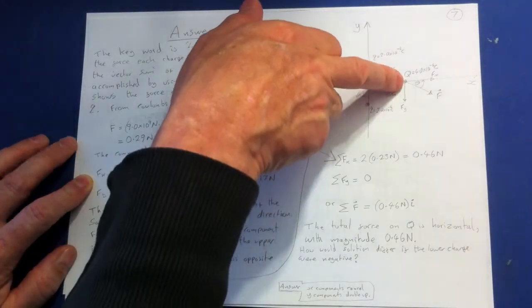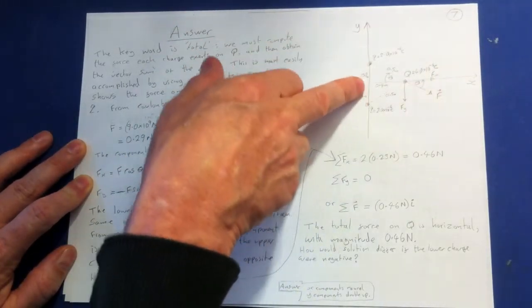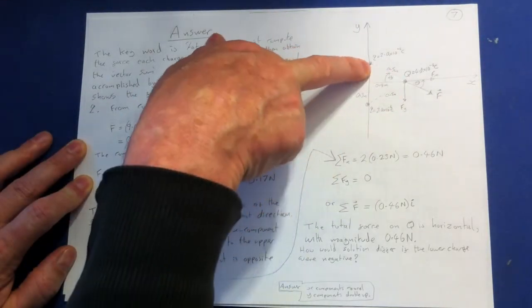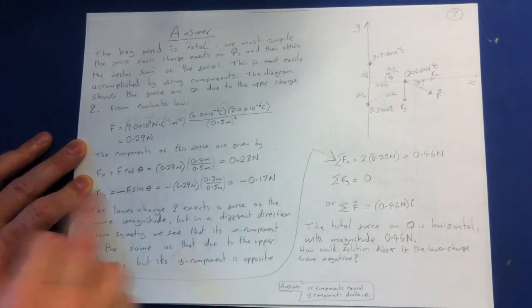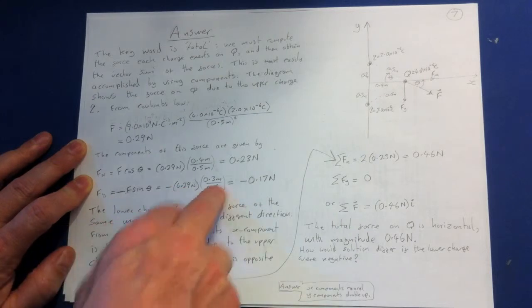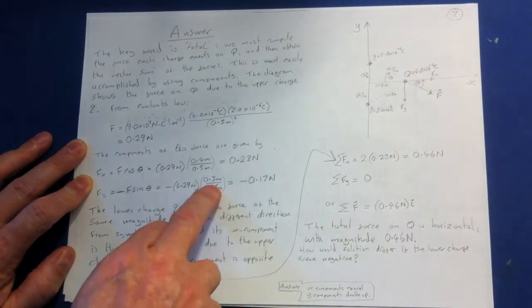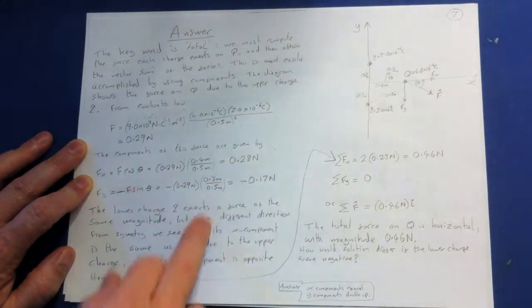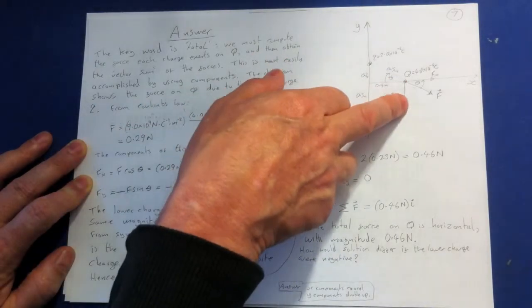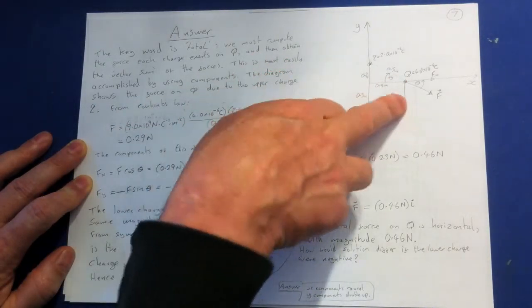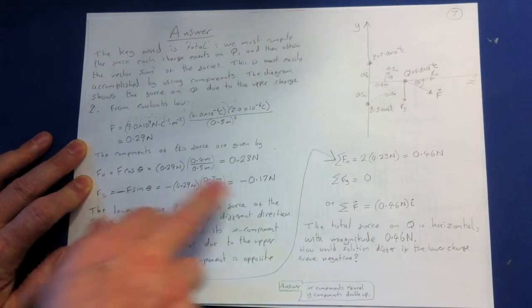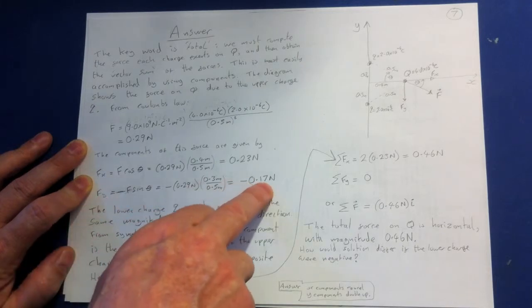And then similarly, we do the same for the Y. So in the Y, now notice the Y is going down. Now, when we define this diagram, we define the positive Y axis as going up. And because of the position of this, obviously, the Fy is going down. So this is why we've got the minus sign here. So that becomes minus 2.9. Again, same idea here. We've got 0.3, which is this side here, divided by 0.5, which is hypotenuse again. And you can see that by the constructing of a triangle here. If you bring that across, you can see the angles. So again, you've got F of Y is minus 0.17 newtons.